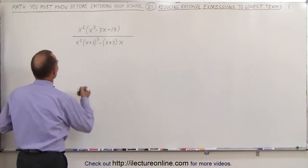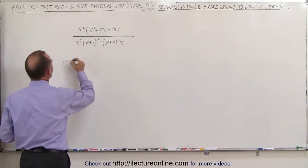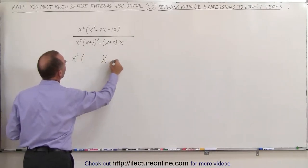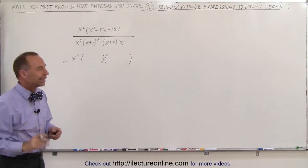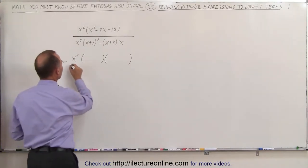Alright, let's try that. So first of all, we can see that the numerator can be written as x squared times the product of two binomials, thus of course assuming that this can be factored, and I think it can be. So let's try that.